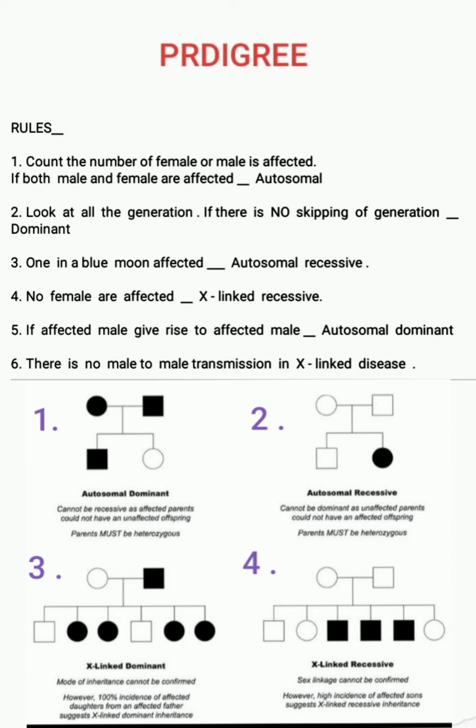Rule number two: look at all the generations. If there is no skipping of generations, then it is dominant. If all generations are affected, we can say that it is dominant. Rule number three: one in a blue moon affected — that is autosomal recessive.